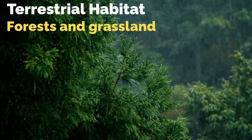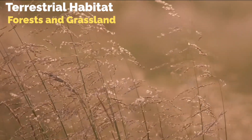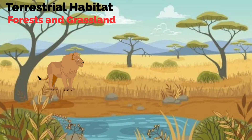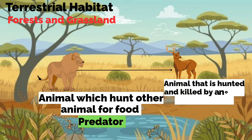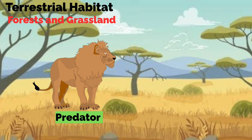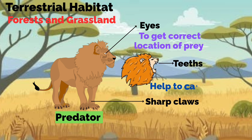In forest and grassland habitats, sufficient rainfall maintains moisture in the soil, which is helpful for the growth of grass. There are a large number of animals and plants in such habitats. Animals like the lion obtain food by hunting other animals such as deer. The animal that hunts other animals for food is called a predator, while the animal that is hunted and killed is called prey. Both have adaptations for survival. The brown colour of a lion helps it to hide in the brown grass, and it has eyes at the front of its face to get the correct location of its prey.